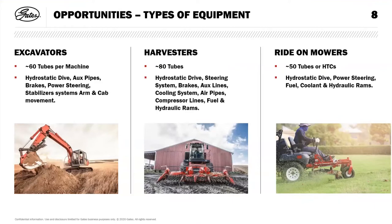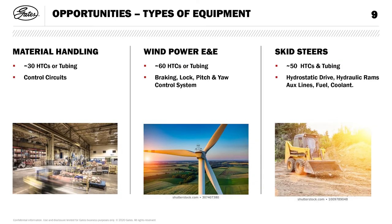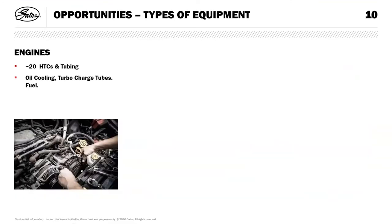Surprisingly, there are around 50 tubes on one of these little mowers, which makes it look nice and neat and provides good protection from stones using the steel tube. Material handling — hydrostatic drives and hydraulic rams. Wind power — we do more and more each year: the braking system, yaw and pitch and lock control systems. Skid steers are a very good application for tubing because underneath the cab, where you have the engine and pump, space is very limited — putting tubes in there makes it look a lot neater. For engines we do oil cooling and turbocharger pipes.